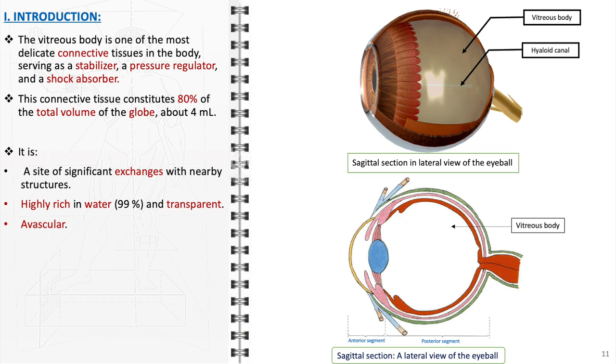The absence of blood vessels, or avascularity, within the vitreous body is essential. Any vasculature could scatter light, disrupting vision and possibly leading to opacities. This avascularity ensures the vitreous remains clear, avoiding blockages that circulating blood cells could create.